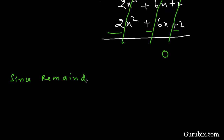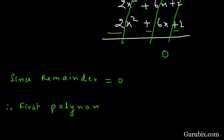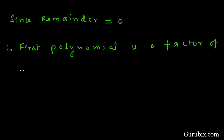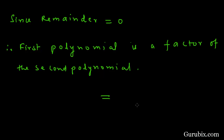Since the remainder is 0, therefore the first polynomial is a factor of the second polynomial. So this is the solution of the question. Thank you.